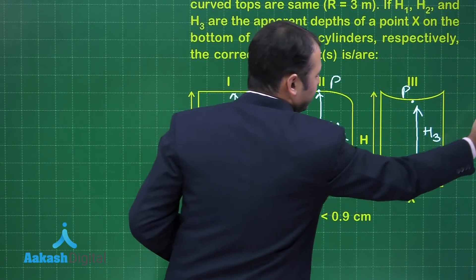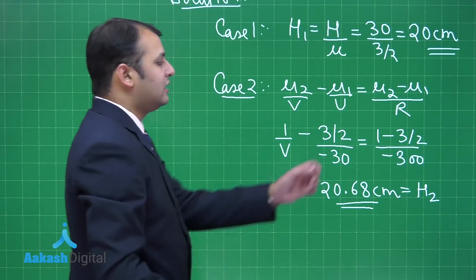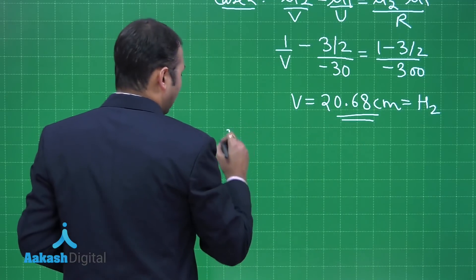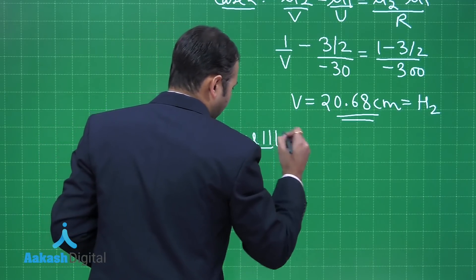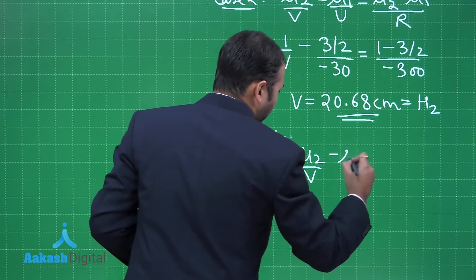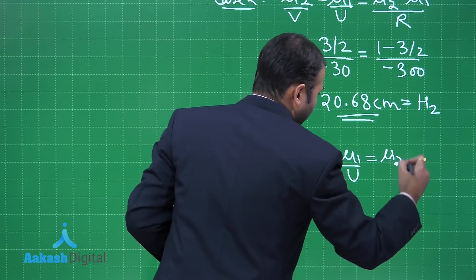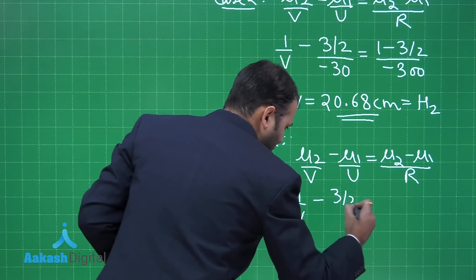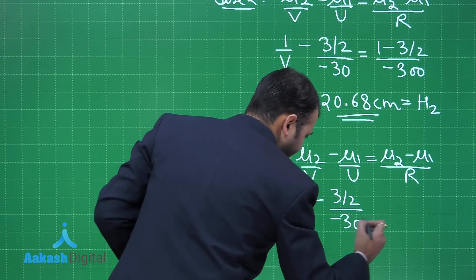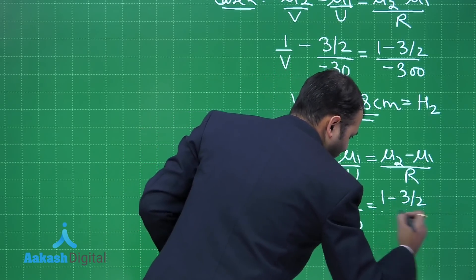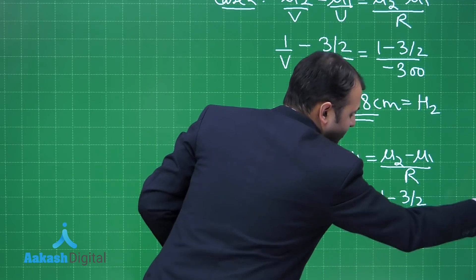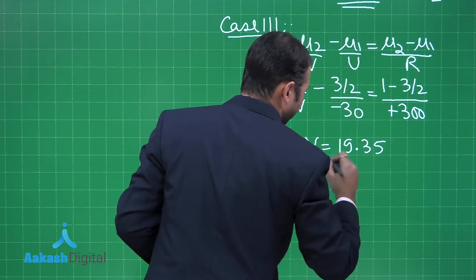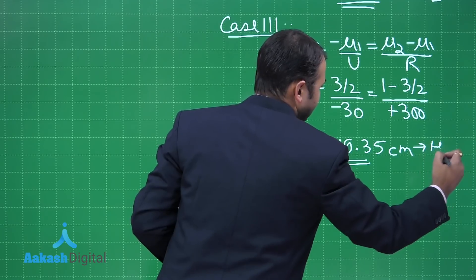For Case 3, the concave surface — the only difference in the equation is that instead of −300 cm for R, it becomes +300 cm because the curvature is reversed. Applying μ₂/v − μ₁/u = (μ₂ − μ₁)/R with the values: 1/v − (3/2)/(−30) = (1 − 3/2)/(+300). Solving this gives h3 = 19.35 cm.